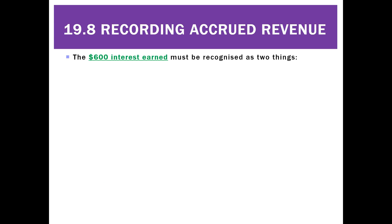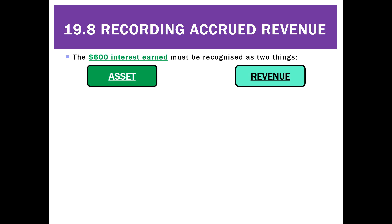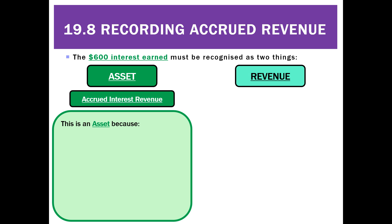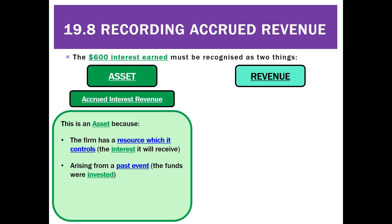So how would we do that? We're going to have to call this $600 interest two things. Firstly, it's an asset and we're going to call that accrued interest revenue. It is an asset because there's a resource which we control — the interest is owed to us, it's a promise to get interest from the bank. There's a past event: the funds are invested at the start of the year, and there'll be a future inflow of economic benefits. In this case, we will receive $600 cash.